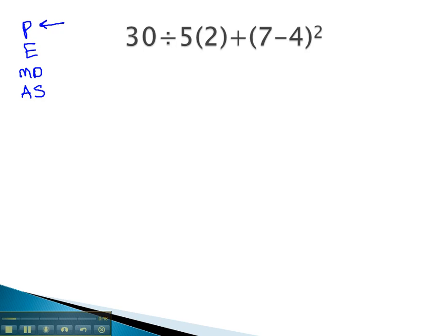Inside parentheses, in common areas people think 5 times 2 is parentheses, but the 5 is not in parentheses, so that would not be a parentheses step. The 7 minus 4 though is inside the parentheses. And so, we'll copy the rest of the problem exactly as it appears, just doing one thing at a time, the 7 minus 4. So, we have 30 divided by 5 times 2, plus 7 minus 4 is 3 squared.